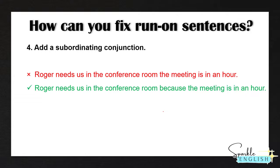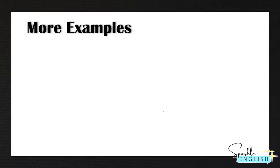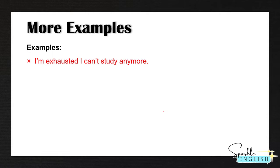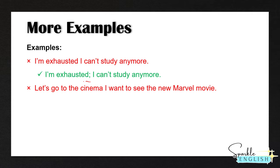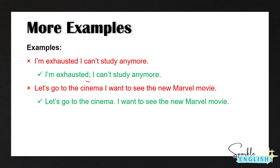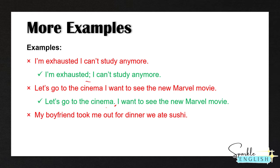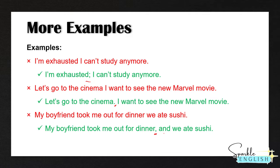So let's look at our other examples from earlier and see how we can fix them. The first example — 'I'm exhausted, I can't study anymore' — we could add a semicolon. The next example — 'Let's go to the cinema, I want to see the new Marvel movie' — let's separate it into two different sentences with a period. The third example — 'My boyfriend took me out for dinner, we ate sushi' — let's add a coordinating conjunction, and remember to add the comma before it.